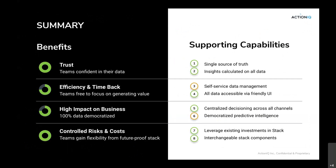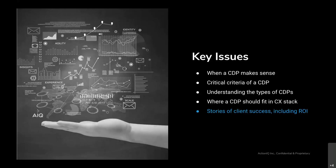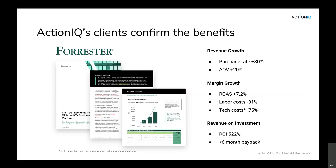Now I want to show some stories of client success, including the ROI. Forrester interviewed four of our biggest clients, wanting to identify how the platform was delivering value across revenue, margin, and ROI. The revenue improvements relate to conversion rates, order values, and advertising improvements, with labor and technology cost reductions and a payback of less than six months. It's a very impressive report. Next I'll explain a couple of client case studies to make this extra tangible.